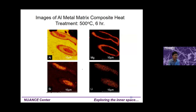Another mapping example is an aluminum metal matrix composite. You can see the aluminum distribution — most of the area is aluminum. At certain edges you can identify magnesium, at another area silicon, and in another region lithium.